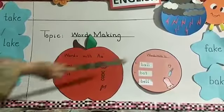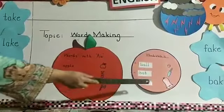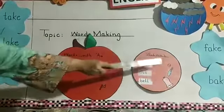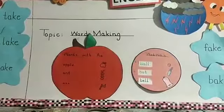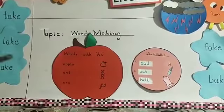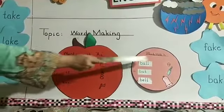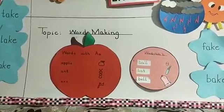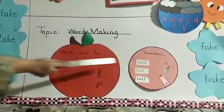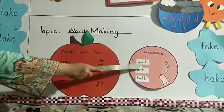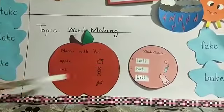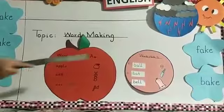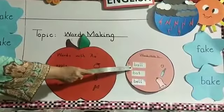Look here. What is this? This is a picture of a ball. And what is the spelling of ball? B-A-L-L, Ball. The starting letter of ball is B.